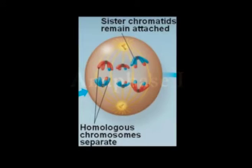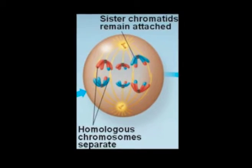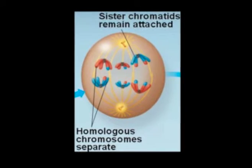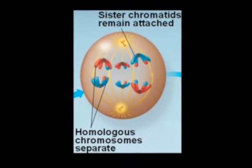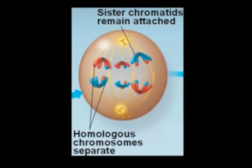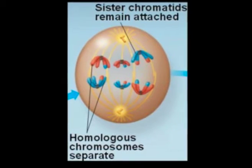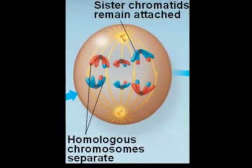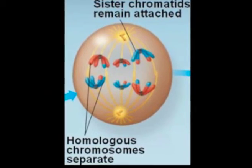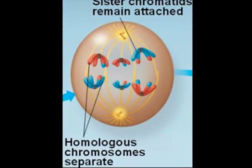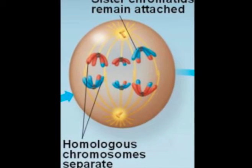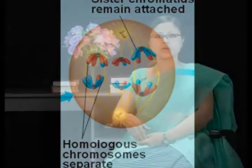Anaphase 1: Homologous chromosomes are freed from each other and, due to the shortening of chromosomal fibers or microtubules, each homologous chromosome with its two chromatids and undivided centromere moves towards the opposite poles of the cell.